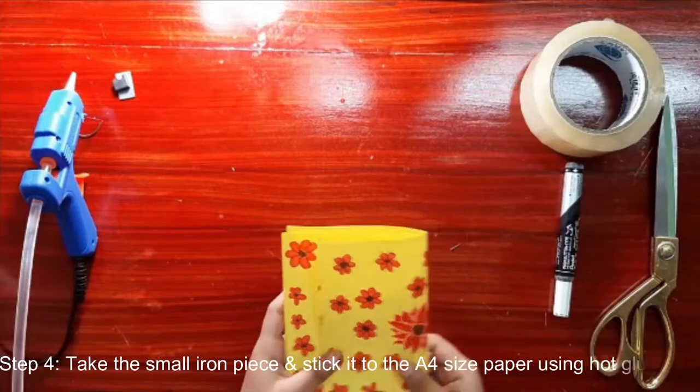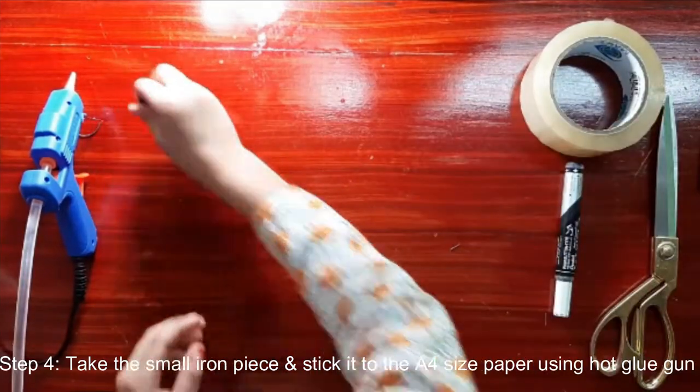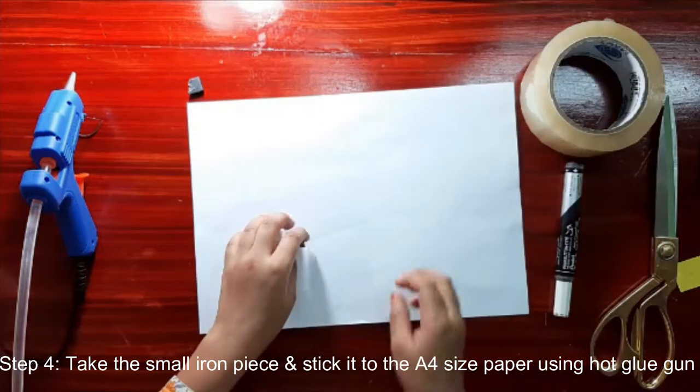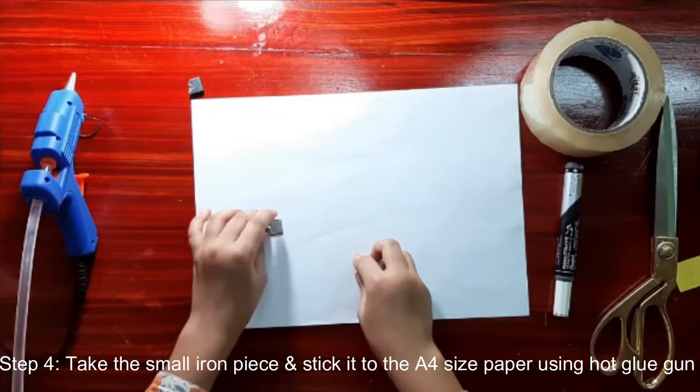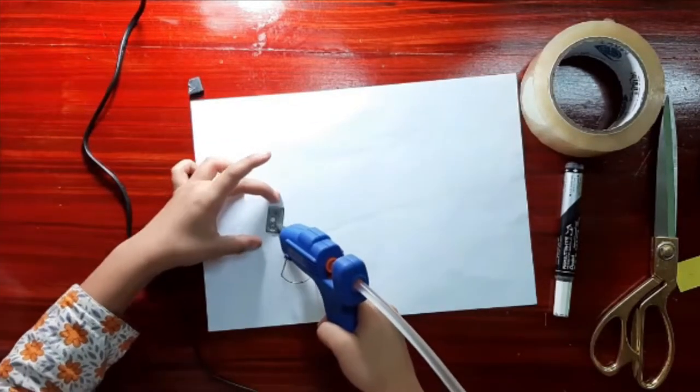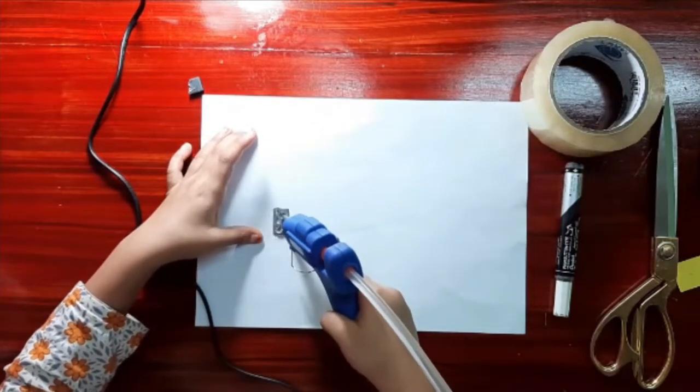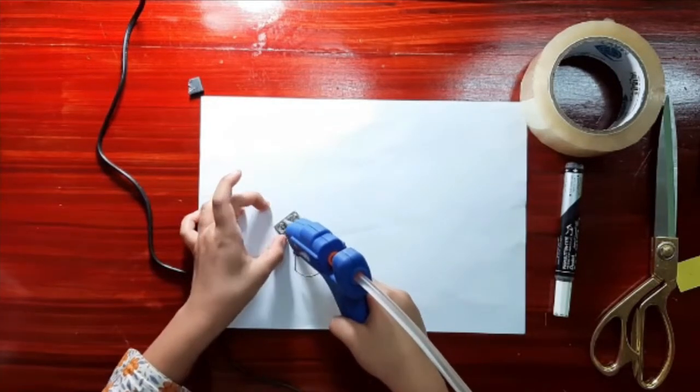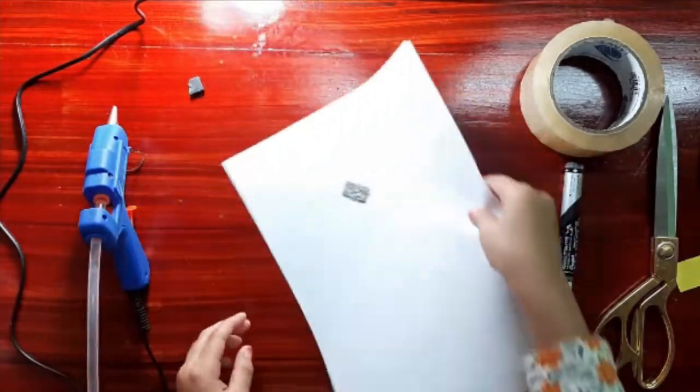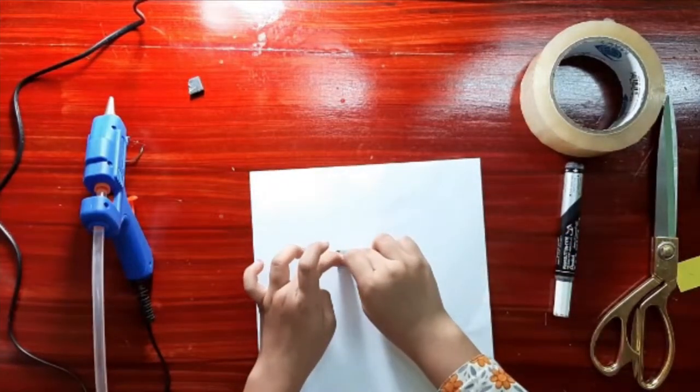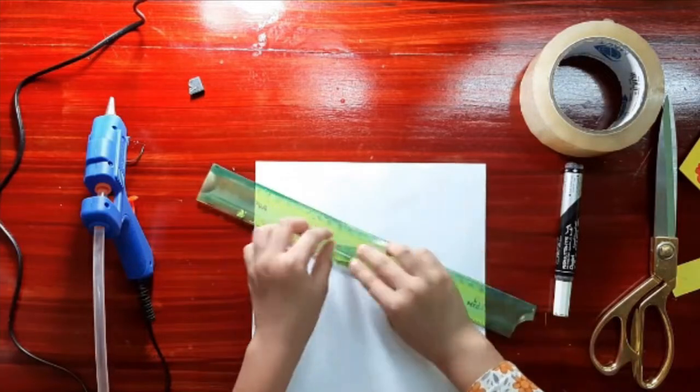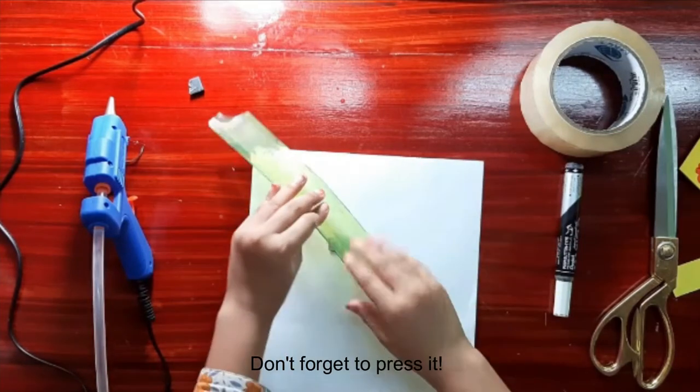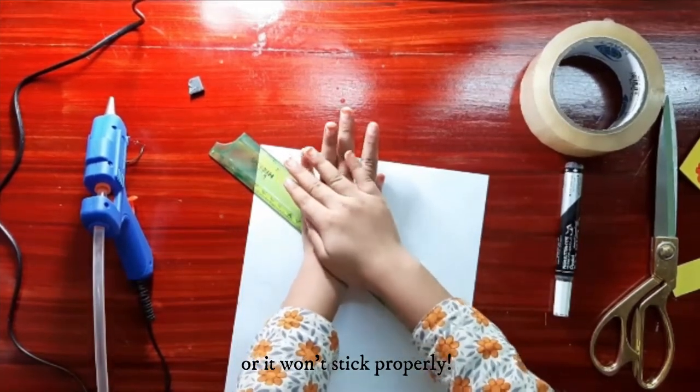Step four: now take the small iron piece and stick it to the A4 size paper using hot glue gun. Don't forget to press it so it sticks properly.